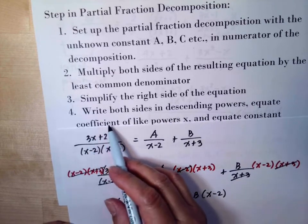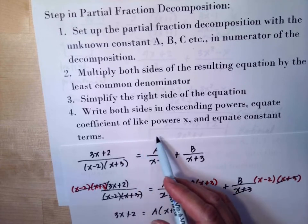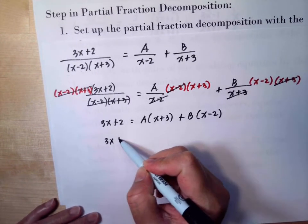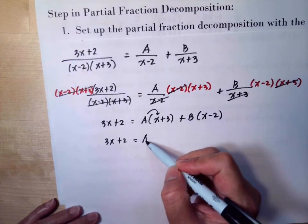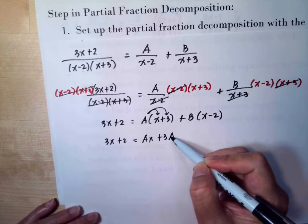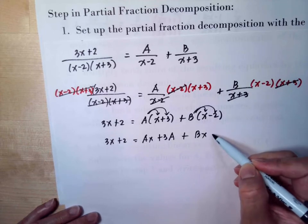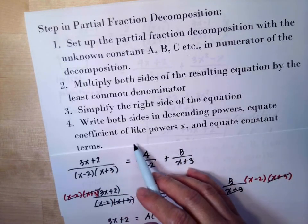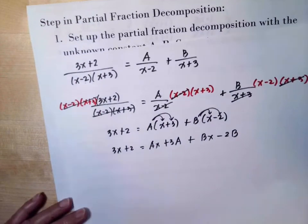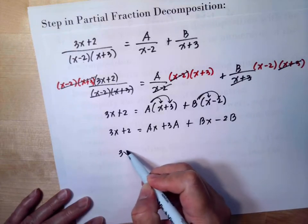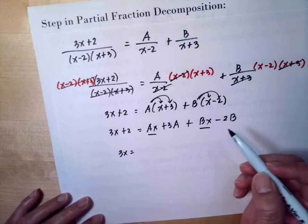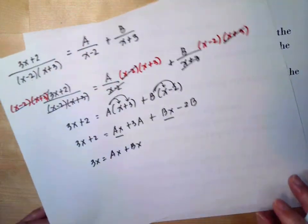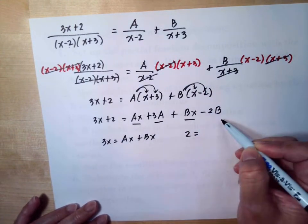Step 4: write both sides in descending powers, equate the coefficients of like powers of x, and equate the constant terms. Distributing the right side: 3x plus 2 equals Ax plus 3A plus Bx minus 2B. Equating the x terms: 3 equals A plus B. Equating the constant terms: 2 equals 3A minus 2B.